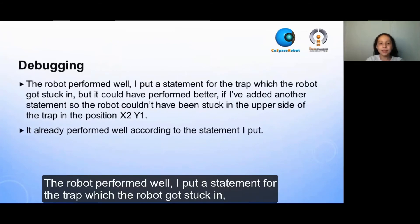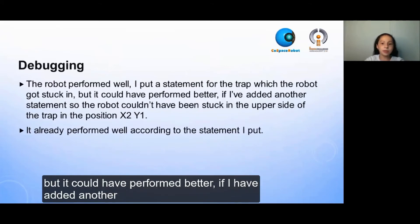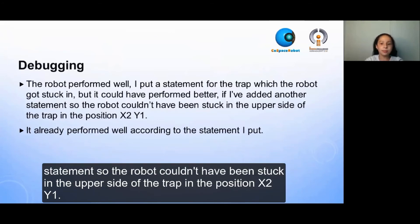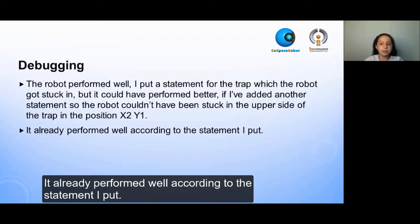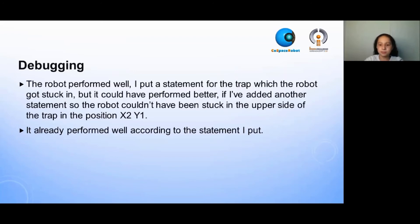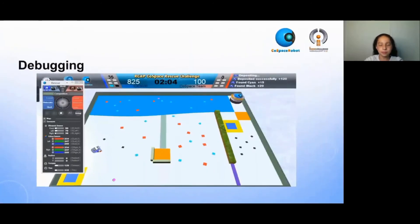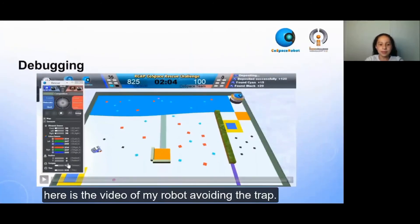The robot performed well. I put a statement for the trap which the robot got stuck in, but it could have performed better if I added another statement so the robot couldn't have been stuck in the upper side of the trap in the position X2, Y1. It already performed well according to the statement I put. Here is a video of my robot avoiding the trap.